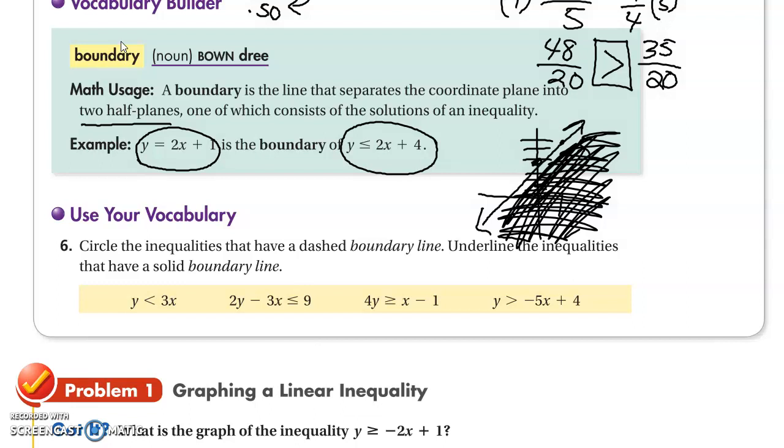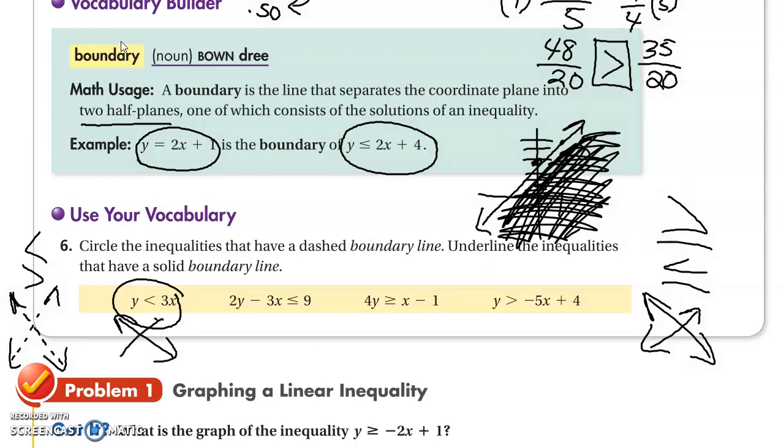Circle the inequalities that have a dashed boundary line. Underline the inequalities that have a solid boundary line. Remember, less than and greater than are going to have a dash. The ones that are less than or equal to, greater than or equal to, will have a solid line. So this one right here, the less than or equal to, will be a solid line. This one is less than, so it's going to have a dashed line. We're going to underline that. And this one is going to be circled, dashed.